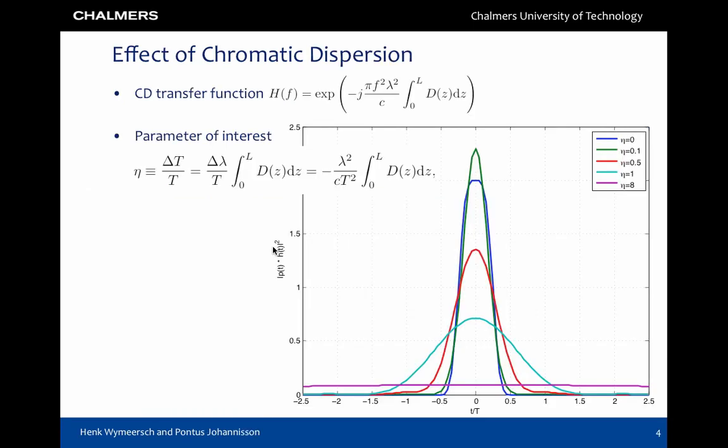Chromatic dispersion is a spreading of the transmit pulse proportional to the distance. The transfer function is given by H where L is the fiber length. The parameter characterizing the dispersion is denoted by eta and is the broadening of the pulse with respect to the symbol slot. The figure shows the broadening for different values of eta. Note that eta equal to zero corresponds to no broadening.